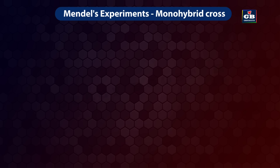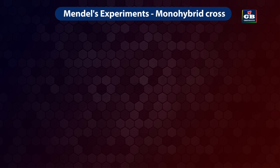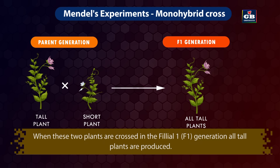A monohybrid cross is a genetic cross between two individuals that differ in a single trait. Mendel selected a pure breed tall pea plant (TT) and crossed it with a pure breed short pea plant (tt). In the F1 generation, all tall plants were produced — each plant got one tall allele and one short allele. Since the tall allele is dominant, all F1 plants expressed tallness.